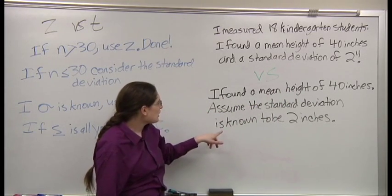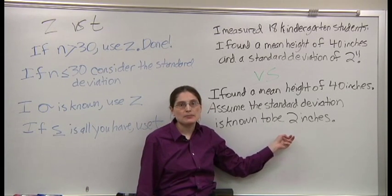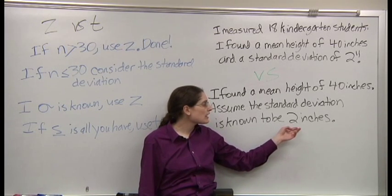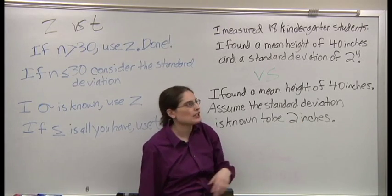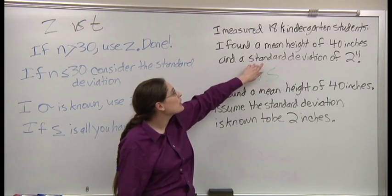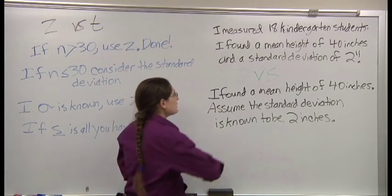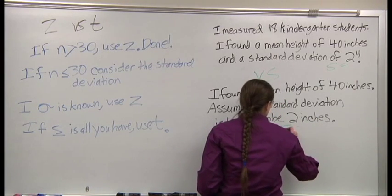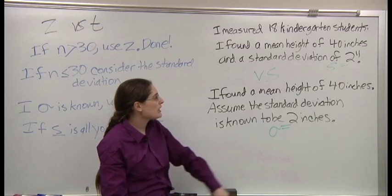That's one clue, but this came maybe from a different study, maybe from a book. I am assuming that I know for sure what the standard deviation is. I have certainty here. Here I have uncertainty in the standard deviation. This is S. This is sigma, the population standard deviation.